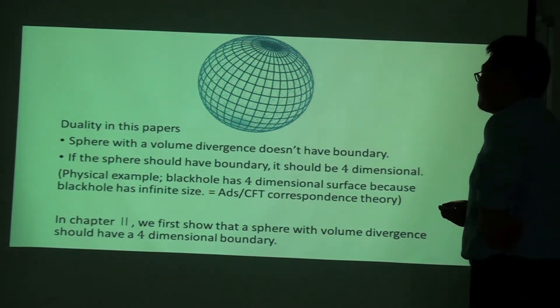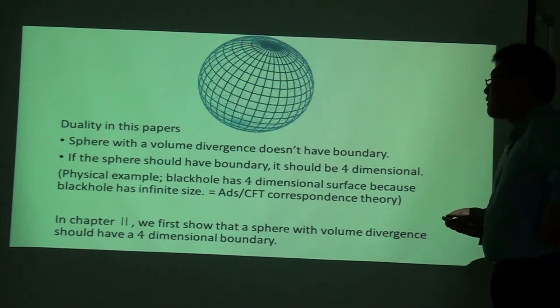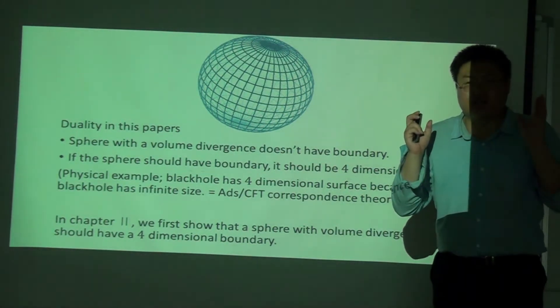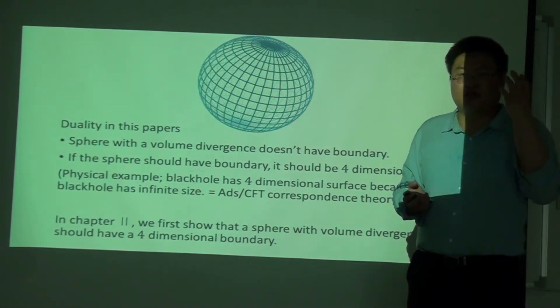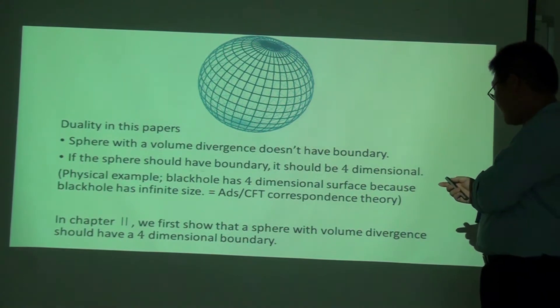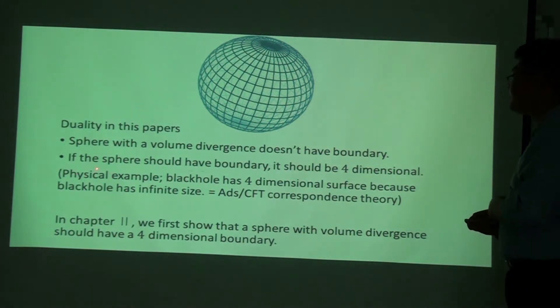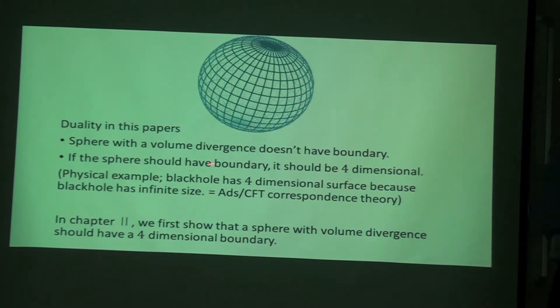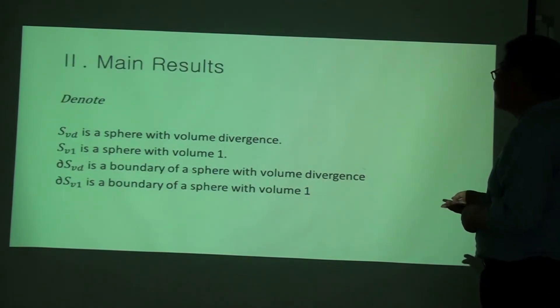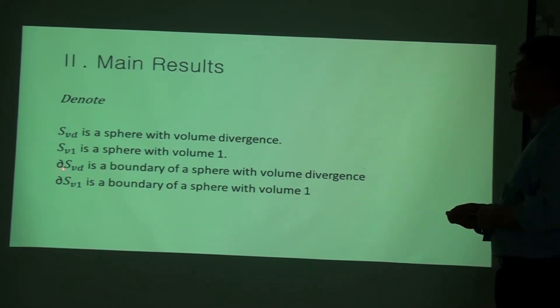Next, the duality in the sphere. As you know, the sphere with volume divergence doesn't have boundary. If the space is a 3D sphere which is very divergent, so it has volume divergence, then there should be no boundary. If the sphere should have boundary, then it should be four-dimensional, which is S4. And the first example of that kind of stuff is black hole, the four-dimensional surface.